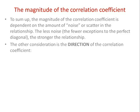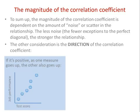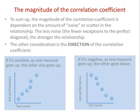The other thing to bear in mind is direction — it can be positive or negative. In a positive relationship, as one measure goes up the other also goes up. In a negative relationship, as one goes up the other goes down. If I saw a negative correlation in the context of this electrician example, the first thing I'd assume is I'd screwed up the test scoring and got things the wrong way round. Because it is being predictive — it is predicting job performance, just back to front.